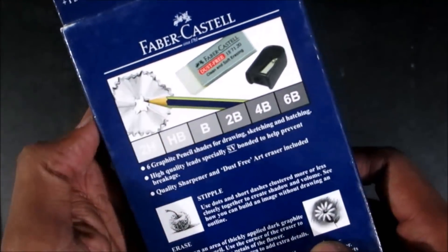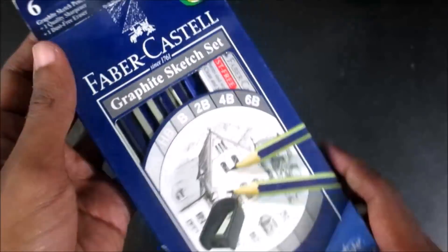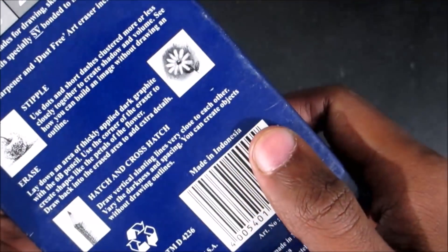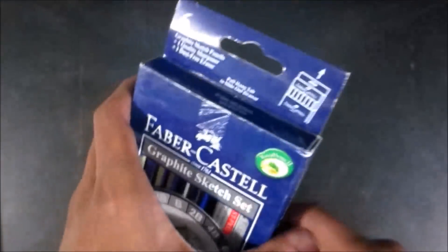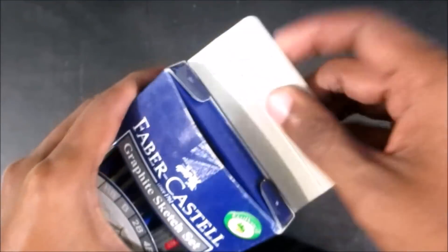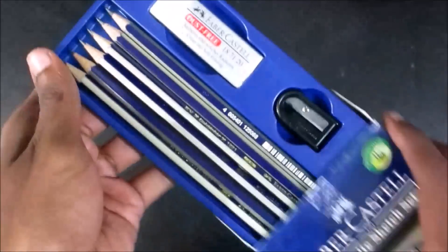HB, B, 2B, 4B and 6B, and also an eraser and sharpener. These pencils are made in Indonesia. Don't confuse them with Indian pencils which are 40-50 rupees and are not of such good quality.